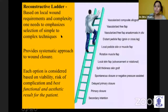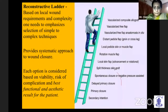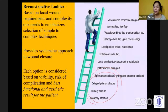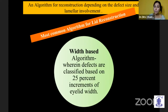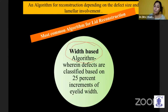Looking at the reconstructive ladder, based on the requirement and complexity we need to select the procedure, which can be very simple or much more complex. We have to give the best functional and aesthetic result to the patient. For postgraduates, it's very important to know the algorithm. The most common algorithm for lid reconstruction is a width-based algorithm, based on the size of the defect and the lamellar involvement, wherein defects are classified based on 25% increments of the eyelid width.